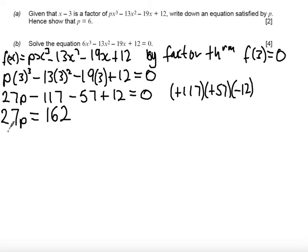So we get 27p is equal to 162, and if I divide by 27, then we get p equals 6 as required.